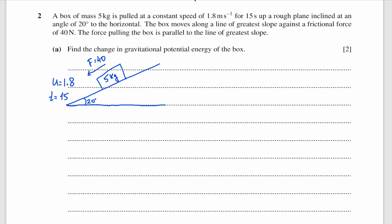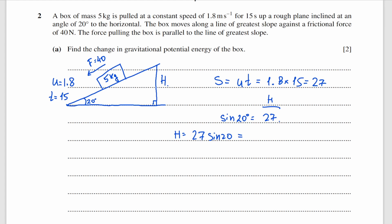First we'll have to find the change in potential energy of the box, so we need to find the height. I will find the distance the box travels along the plane by multiplying velocity by time: 1.8 times 15, which is 27. Using trigonometry, sine 20 equals height over 27, so the height is 27 times sine 20, which equals 9.235.